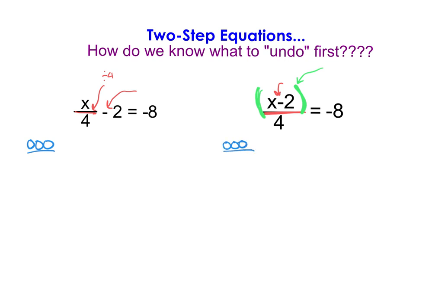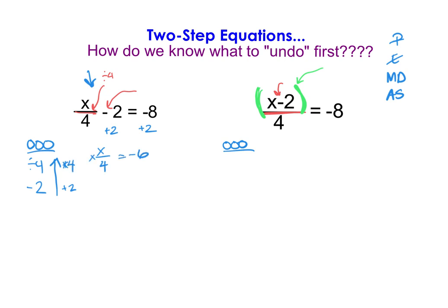We list out the order of operations for each problem. On the left, there are no parentheses, no exponents. Multiplication and division come next — I have a division of 4. Then addition and subtraction — I see a subtraction of 2. To solve the left problem, I undo in reverse: the opposite of subtraction is addition, so I add 2 to each side. Then I undo the division by multiplying. We end up with x equals negative 24.